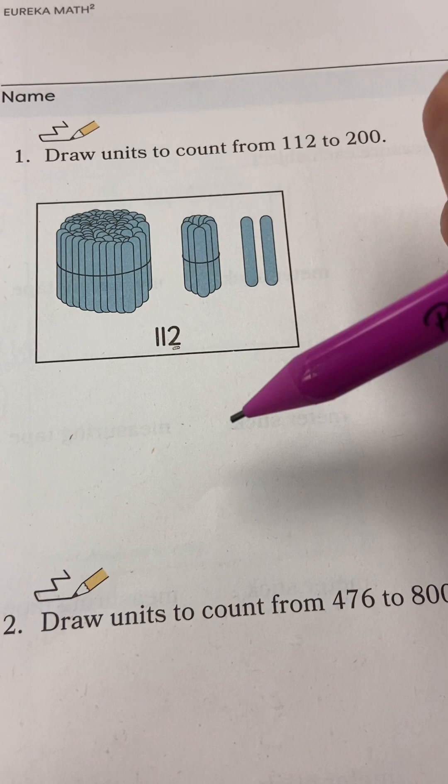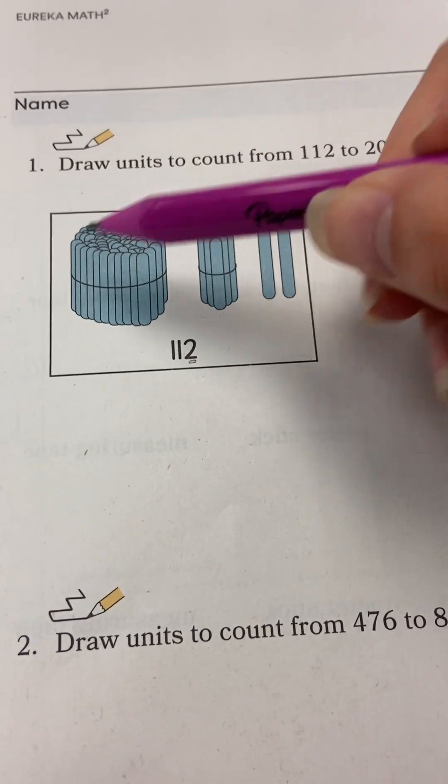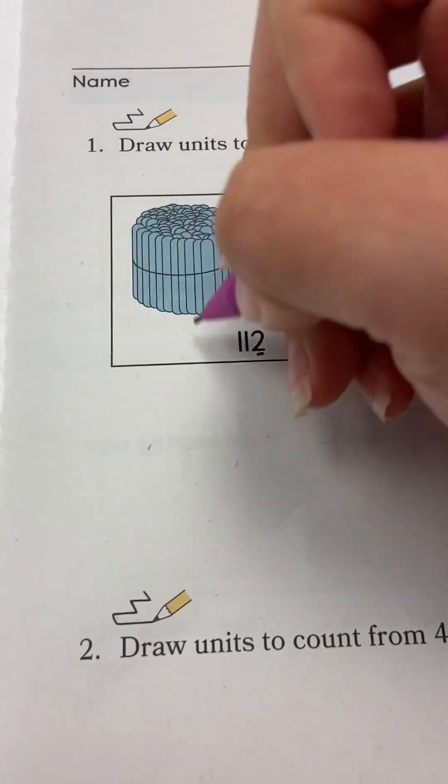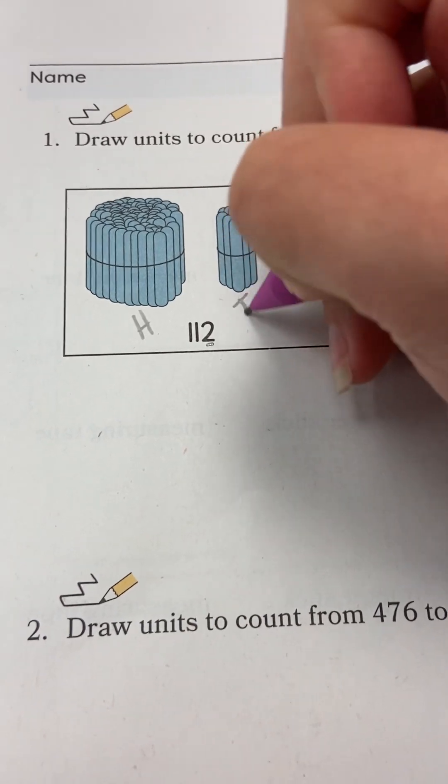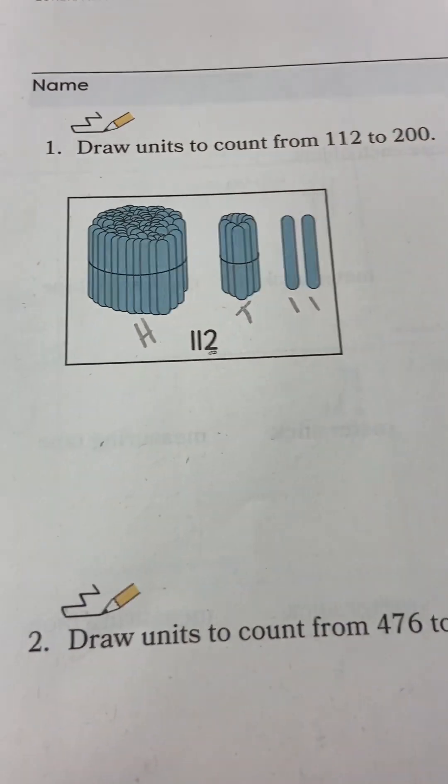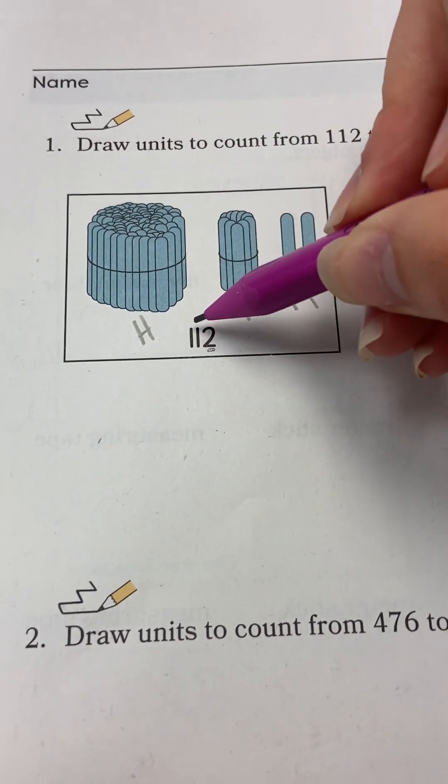Now from the homework helper, on this picture we see this bundle right here. This is 100, this is a 10, and these are the two ones. So that is representing 112.